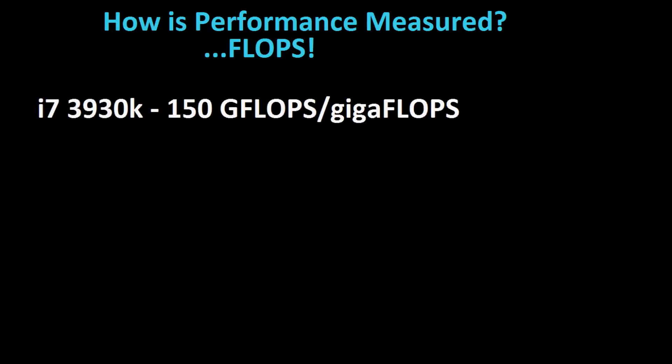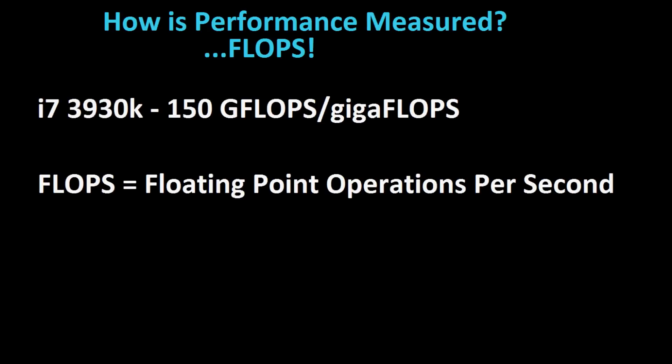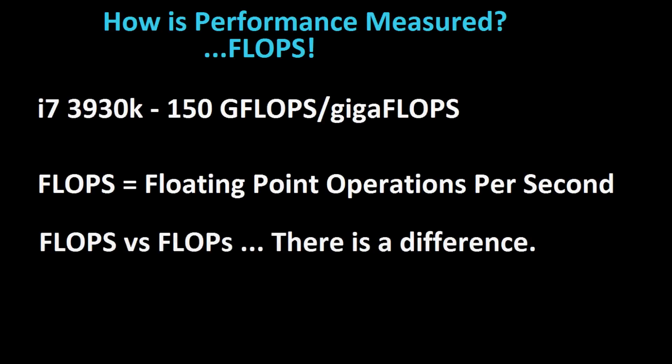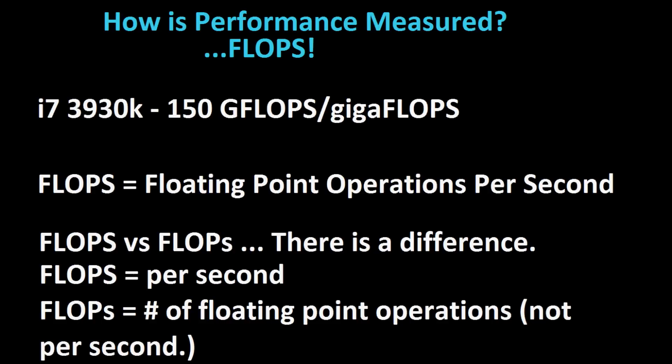So the i7-3930K pushes 120 to 150 GFLOPs — that's 120 billion floating point operations per second. FLOPs stands for floating point operations per second. Note that all-caps FLOPs means floating point operations per second, while FLOP with a lowercase 's' just means floating point operations without the per-second qualifier — you use FLOP to calculate FLOPs. So 120 GFLOPs means 120 billion floating point operations per second.